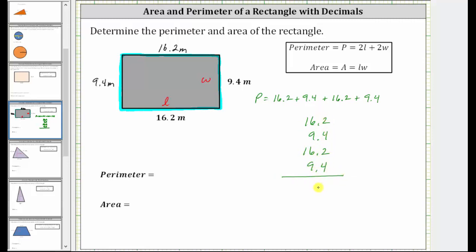Bring the decimal down into the sum, and now we add starting with the rightmost place value. We have 2 plus 4 which is 6, plus 2 which is 8, plus 4 which is 12. Record the 2 and perform an exchange with the 1.